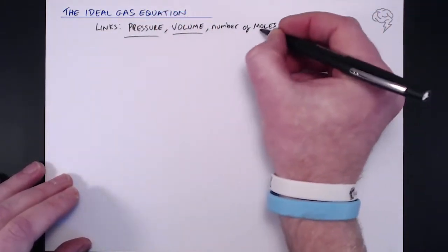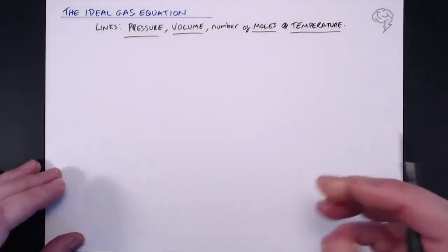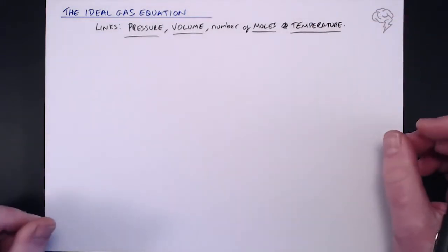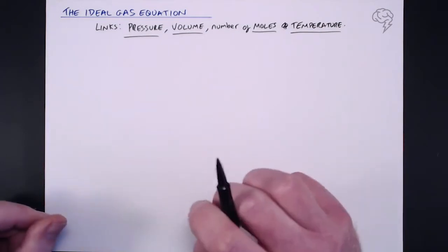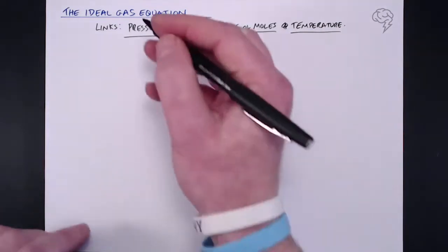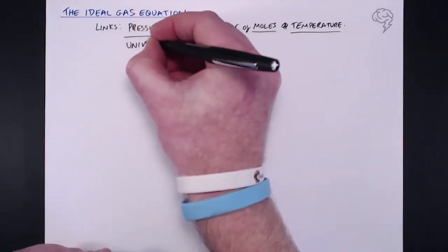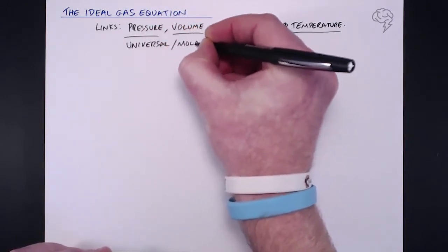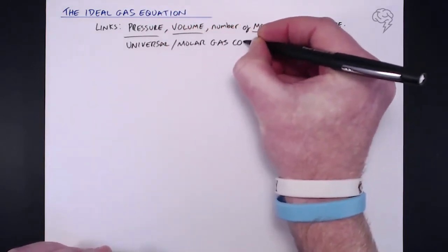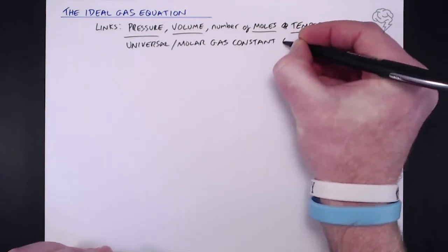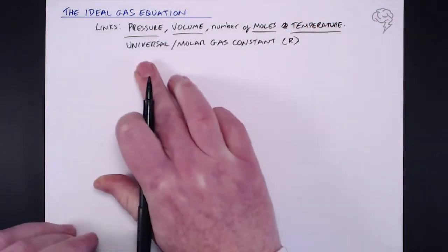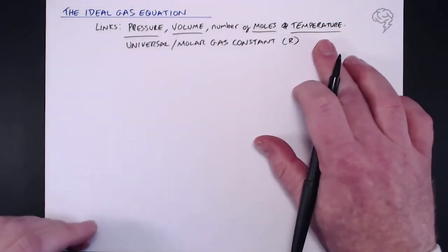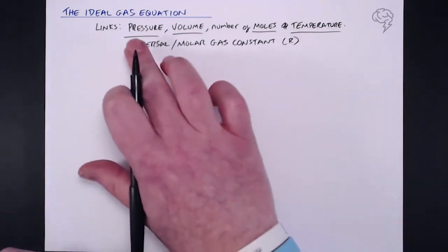So pressure, volume, moles, and temperature all have these interrelationships between them. We need one thing to link them all together though, and that is our universal or molar gas constant. So if you see either of these two things, they basically mean the same thing.